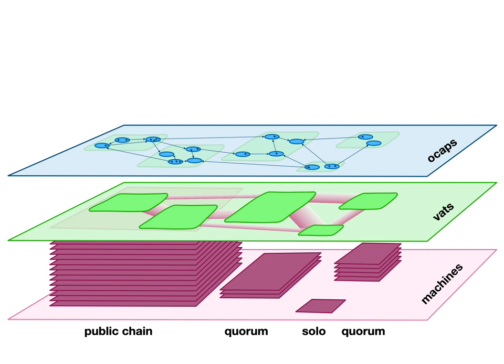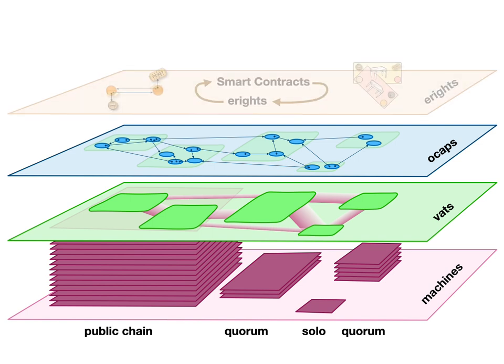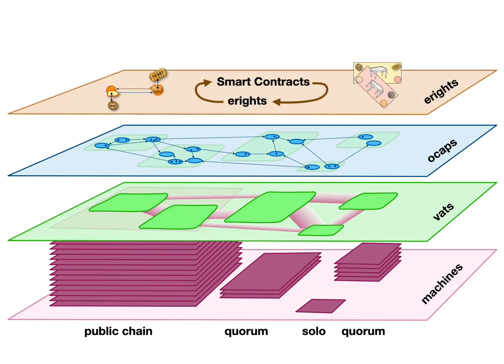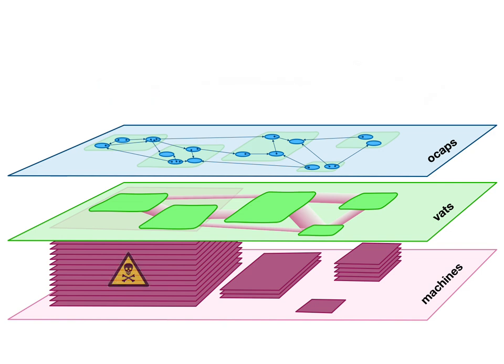The overall result is that we have mutually suspicious objects on mutually suspicious machines talking to each other. The mutual suspicion at both levels is important. On top of that, we build our system of e-rights and smart contracting. The important property with regard to the distributed systems constraints is exactly this mutual suspicion — among the machines and among the objects.